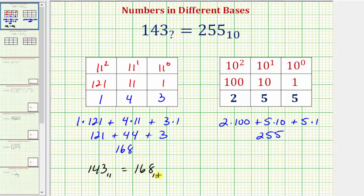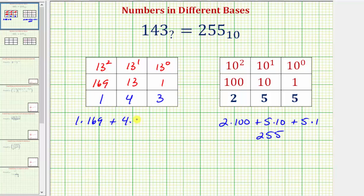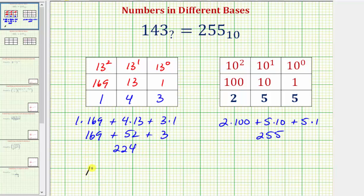Let's try base 13. For base 13, the ones place value is 13 to the zero, the next is 13 to the first or the thirteens place value, and the leftmost is 13 squared, or the 169s place value. So for 143 in base 13, this equals one times 169, plus four times 13, plus three times one, which is 169 plus 52 plus 3, equaling 224 in base 10. So 143 base 13 equals 224 base 10, but we want 255 base 10.